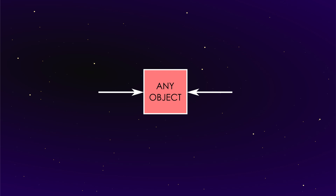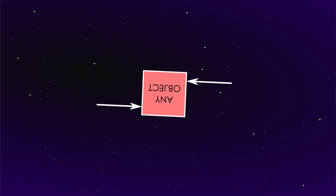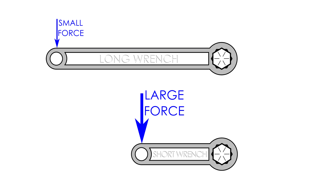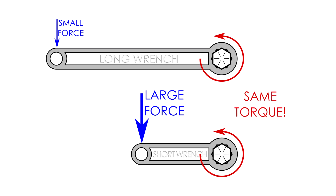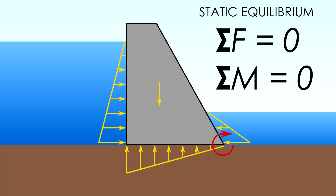Stay with me, because now it gets fun. What if I take the two forces on this object and adjust them so they're not in line with one another? The sum of the two forces is still zero, but you intuitively know that the object is not going to be static — it's going to spin. A rotational force is known as a moment or torque. Torque is the product of the force and its distance from the center of rotation, so a small force with a long lever arm is equivalent to a large force with a small lever arm.